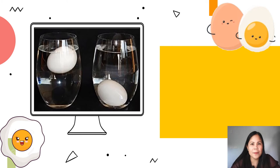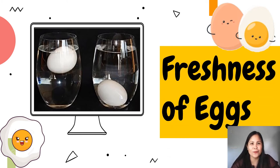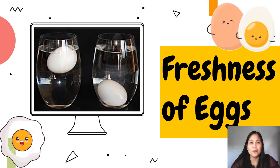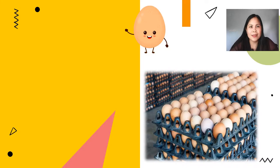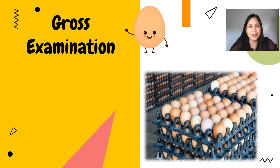We're now moving on to the different ways to determine the freshness of eggs. Almost everyone has been faced with this problem — you reach into the fridge for an egg but can't remember how long they've been sitting there. Over time, an egg's quality begins to decline as the air packet inside gets larger and the whites get thinner. However, an egg only goes bad when it starts to decompose because of bacteria or mold. There are several methods you can use to determine if your eggs are good or bad.